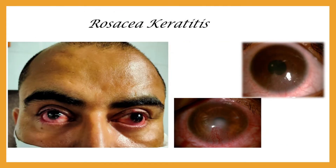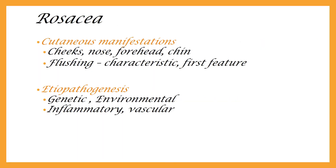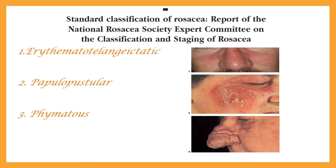We are starting with an entity which is not very common — that is rosacea keratitis. As we know, rosacea is a skin disease which affects facial convexities, so cheeks, nose, and forehead are usually affected. Flushing, a transient hyperemia, is usually considered the first and characteristic feature. Its etiology is primarily inflammatory with a vascular component. It is broadly classified into four groups depending upon the primary manifestation, though these subgroups can overlap.